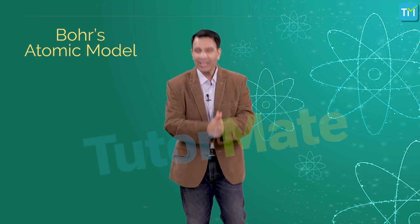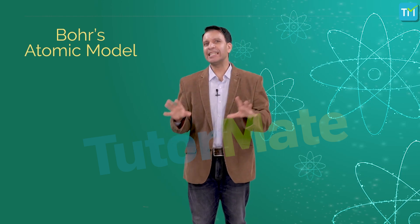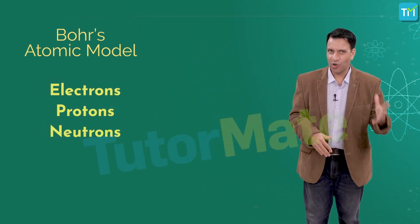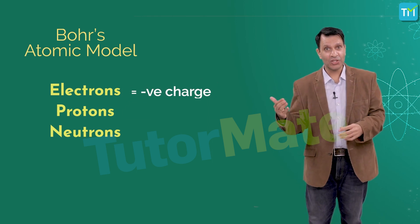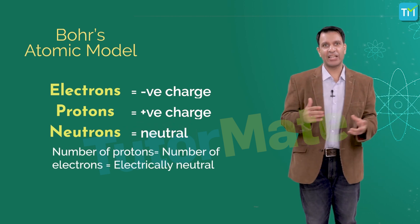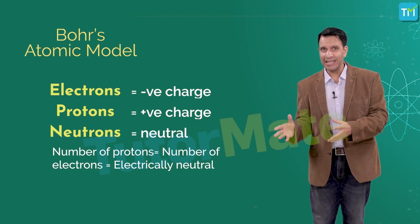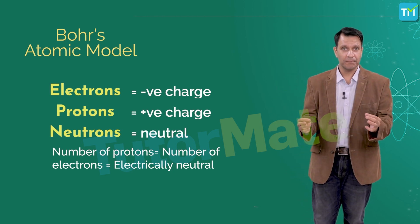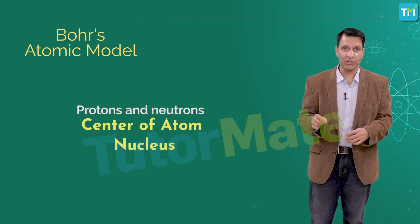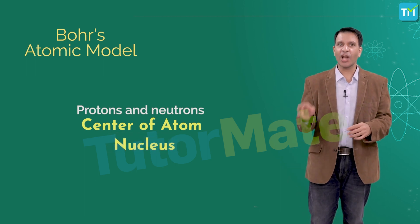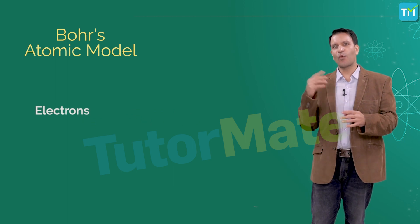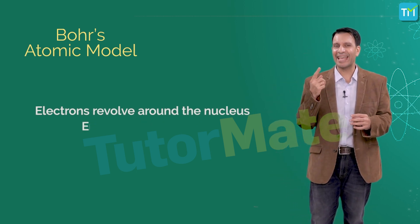According to Bohr's model, an atom is made up of three particles: electrons, protons, and neutrons. Electrons have a negative charge, protons are positively charged, and neutrons are neutral. The number of protons and electrons in each atom is equal, making the atom electrically neutral. Protons and neutrons are present at the center of the atom — the nucleus — which is positively charged due to the presence of protons. Electrons revolve around the nucleus in fixed circular paths called energy levels or shells.